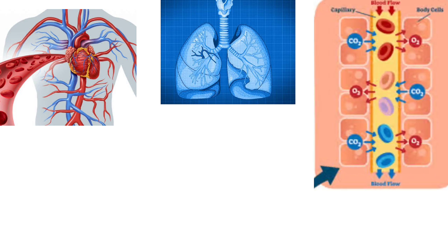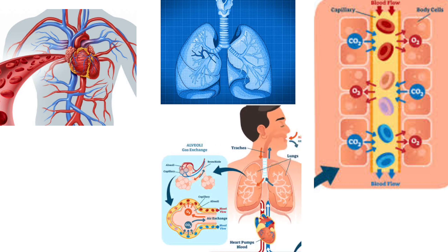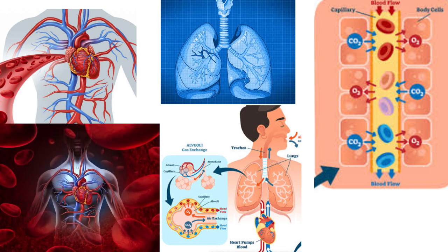All the oxygenated blood is used in the lungs, and it is used to distribute through the body.